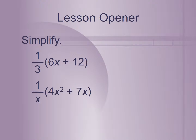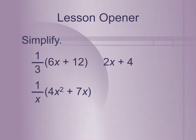For some more simplifying, we have to distribute 1 third to 6x and to 12. Distributing or multiplying by 1 third to each term is the same as dividing 6x plus 12 by 3. Dividing is just multiplying by the reciprocal. So 6x times 1 over 3 becomes 2x, and 12 times 1 over 3 is 12 divided by 3, which is 4. So we get 2x plus 4.